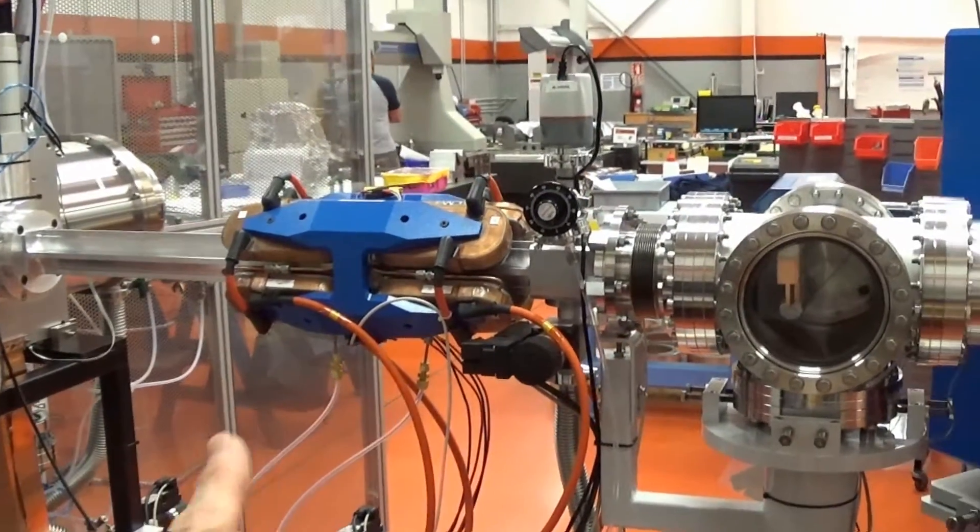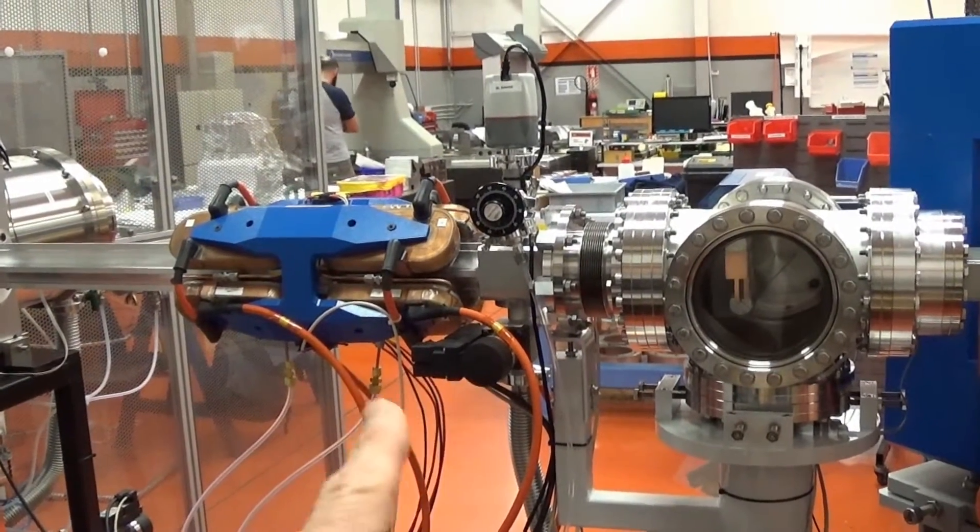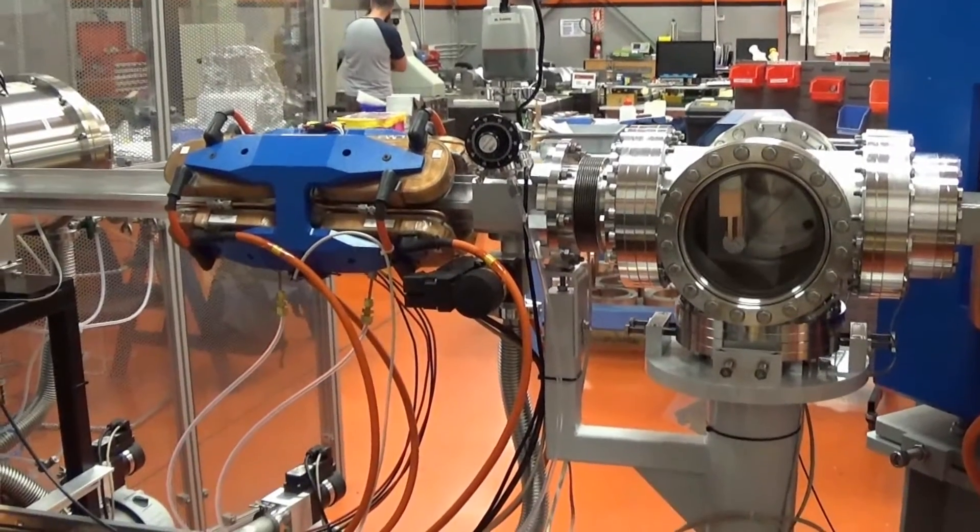And then you can see the connections to the quadrupoles here with these orange wires and also the lighter wires for the steering magnets.